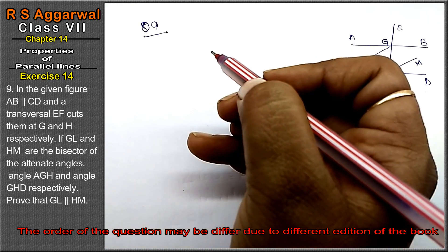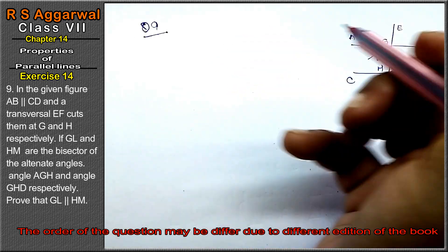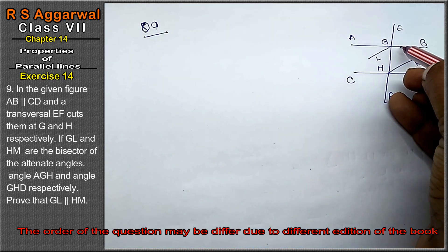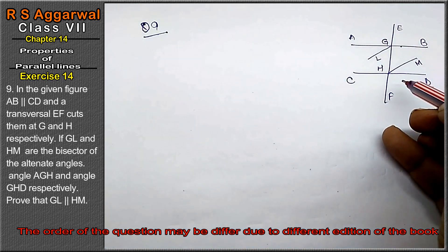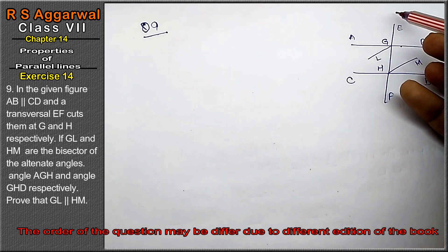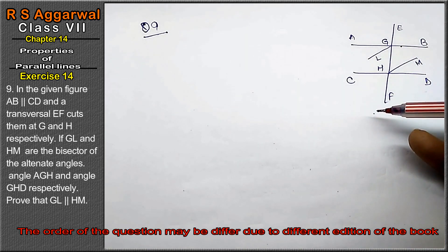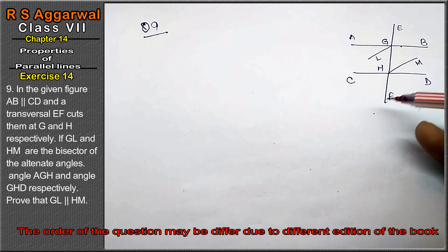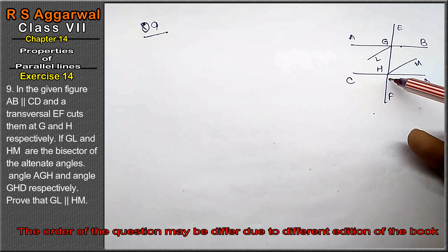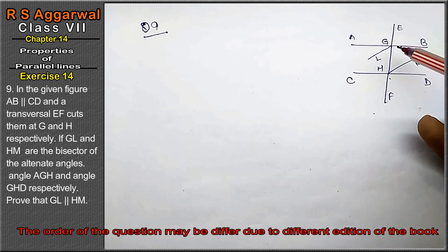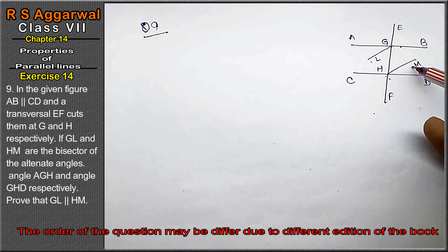Right friends, in the given figure, AB is parallel to CD. And the transversal CEF cuts them at G and H respectively. If GL and HM are the bisectors of the alternate angles.